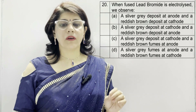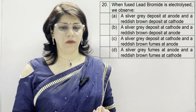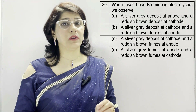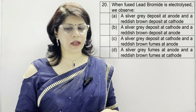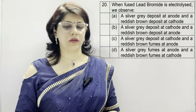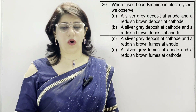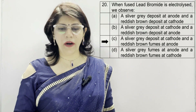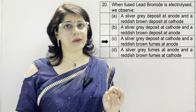In question number 20: when fused lead bromide is electrolyzed, we observe — A: a silver-gray deposit at anode and reddish brown deposit at cathode. B: silver deposit at cathode and reddish brown deposit at anode. C: silver-gray deposit at cathode and reddish brown fumes at anode. D: silver-gray fumes at anode and reddish brown fumes at cathode. The correct option is C.